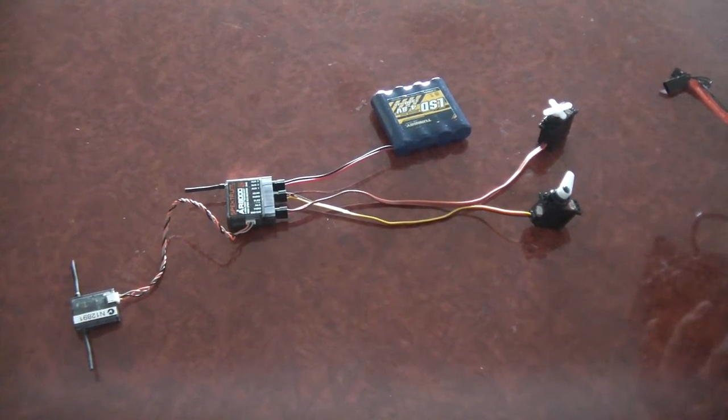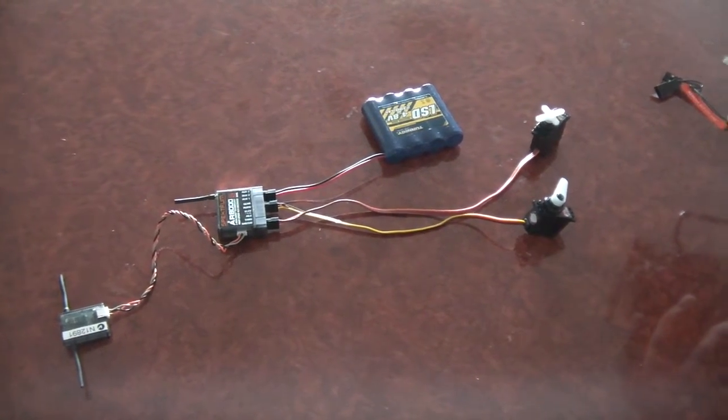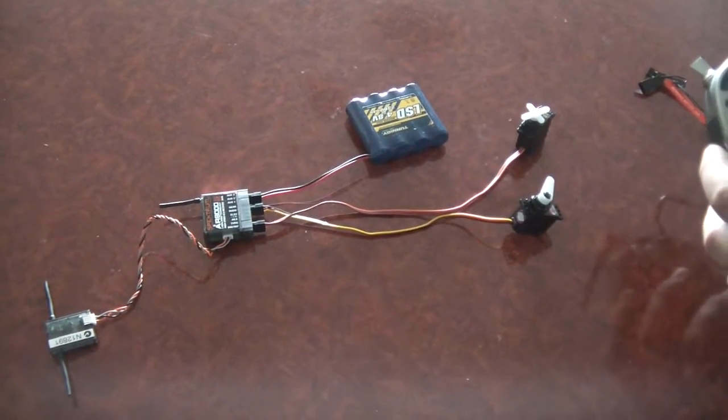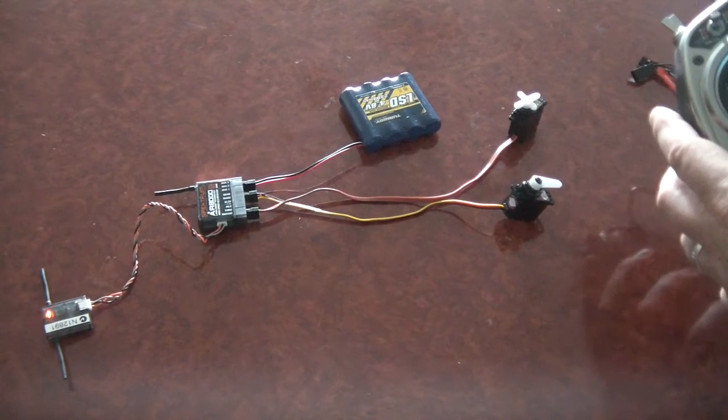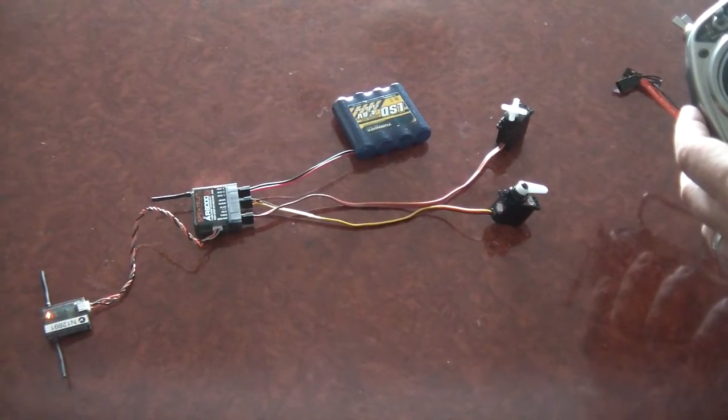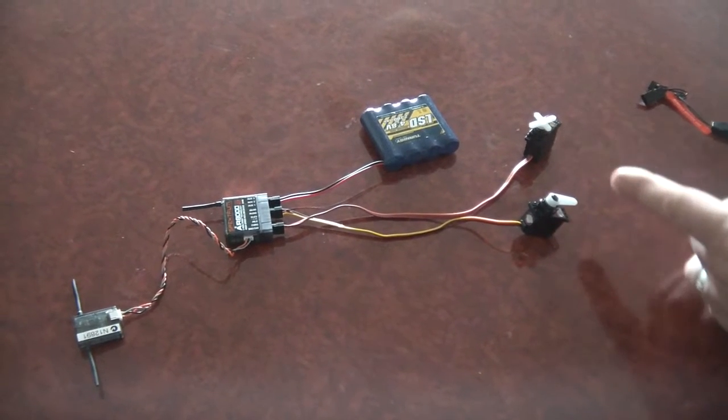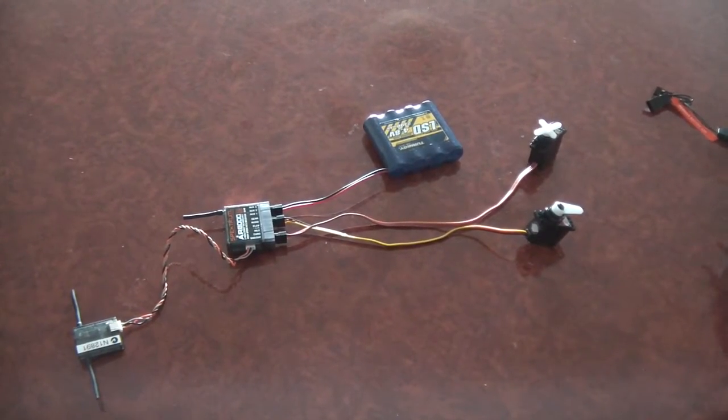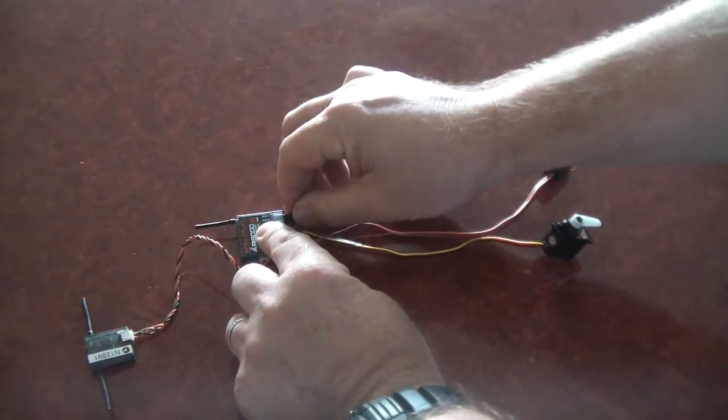Alright, we'll turn the radio on again. Okay, I'll put that to the center position, put the throttle in the middle, and we'll turn off the radio again. Yeah, so failsafe is only working on the throttle channel. So now let's try a workaround to that.